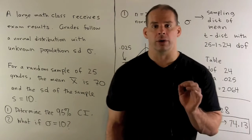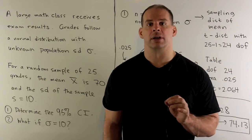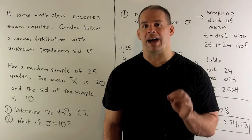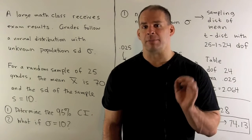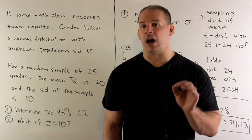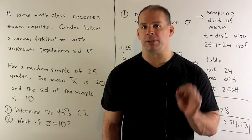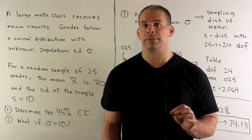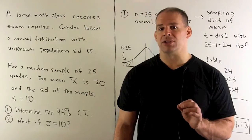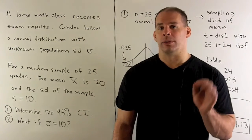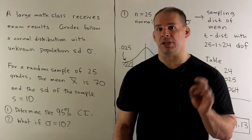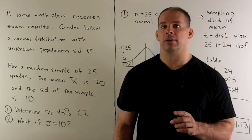We want to know two things. First, find the 95% confidence interval of the unknown population mean. Then, we want to know what happens if the population standard deviation is equal to 10.